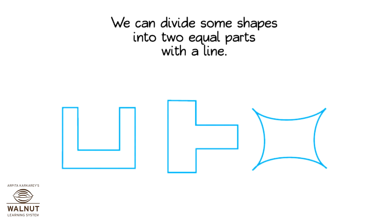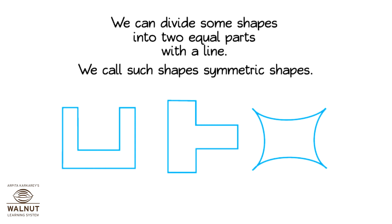We can divide some shapes into two equal parts with a line. We call such shapes symmetric shapes.